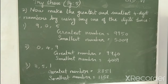Now make the greatest and smallest 4-digit numbers by using any one of the digits twice. In the previous case the condition was without repetition, but now we have to use any one digit twice. Three numbers are given and we have to make a 4-digit number. The first set is 9, 0 and 5. The greatest number among the three is 9, so 9 can be used twice. The greatest number is 9,950. For the smallest, 0 can't start the number, so the next smallest is 5, and 0 can be used twice. So the smallest number is 5,009.